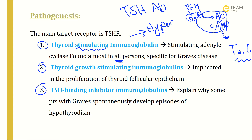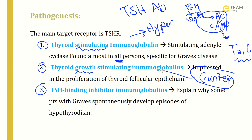The second antibody is thyroid growth stimulating immunoglobulin, implicated in the proliferation of thyroid follicular epithelium. This explains the sign of goiter in Graves' disease — it stimulates follicular cells to grow, increasing their number (hyperplasia) and size (hypertrophy), producing goiter.